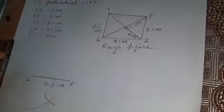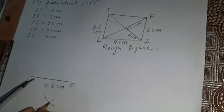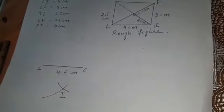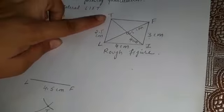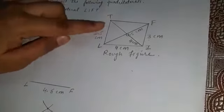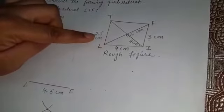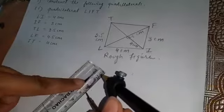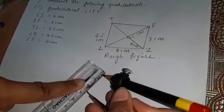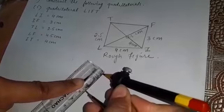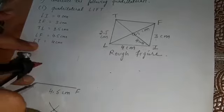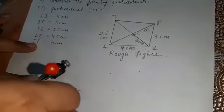The point where the two arcs intersect each other is point I. We have got point I. Now let's mark point T. The distance between T and L is 2.5 centimeters, so open your compass to 2.5 centimeters. Using L as center, draw an arc of 2.5 centimeters.